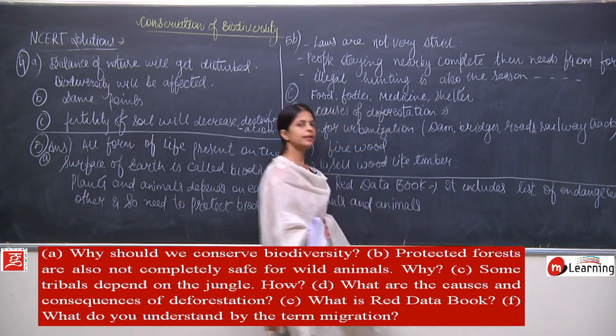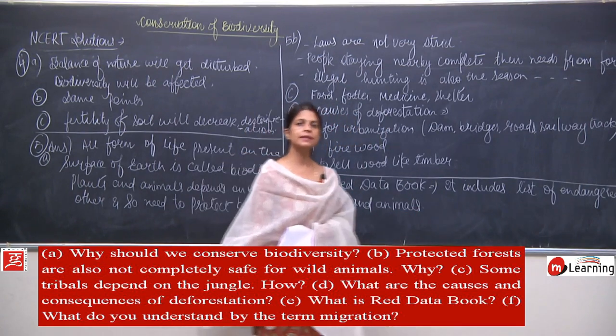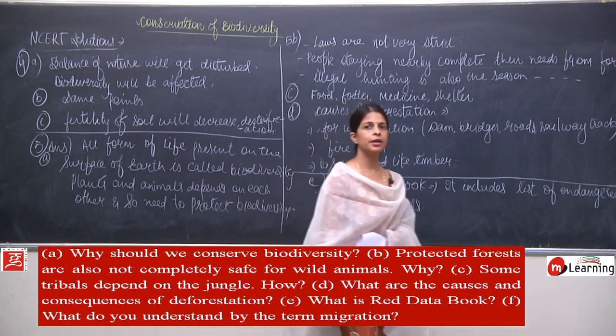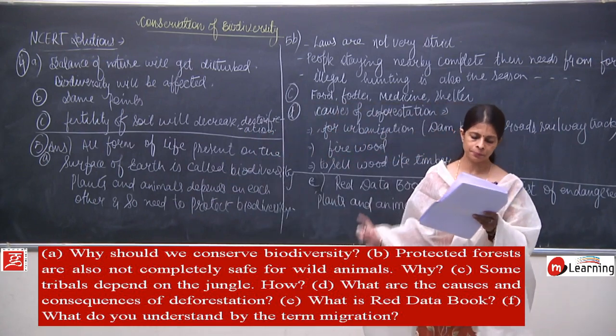The Red Data Book includes a list of endangered plants and animals. The first edition was released in 1991 and the second edition was released in 1994.